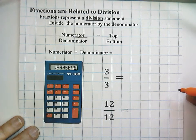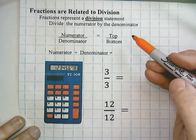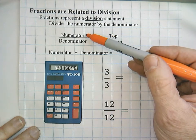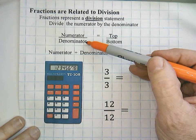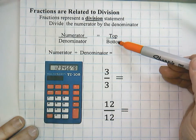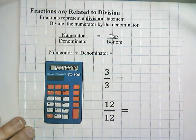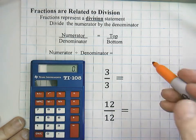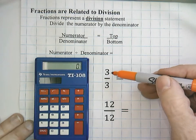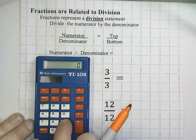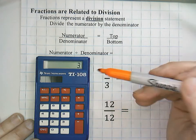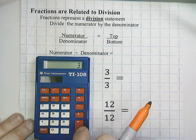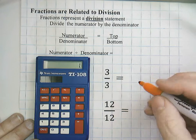Remember that fractions are related to division — fractions are basically a division statement. You divide the numerator by the denominator; in other words, the top is divided by the bottom. I can illustrate that with a calculator. For example, 3 thirds: if I divide 3 by 3 on the bottom and push equal, notice that it equals 1 whole.